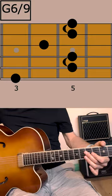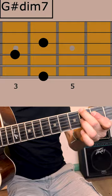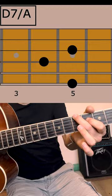I use G6/9, then G sharp diminished 4-3-4, a half tone above D7 over 8-5-4-5. The timing is important: 1 and 2 and 3 4 1, only downstrokes.